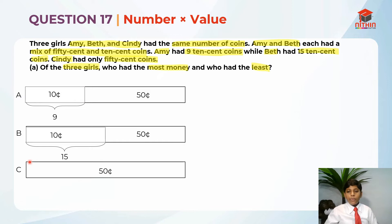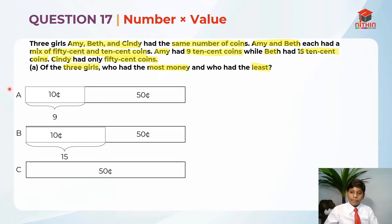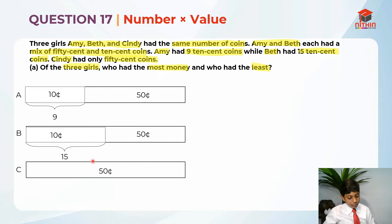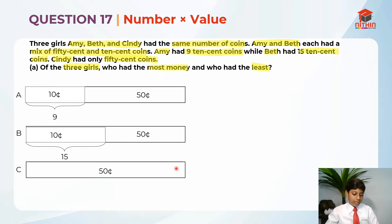So now, who had the most money? We can work out from the most money first. Is it Cindy, Beth, or Amy? We see that Cindy had 50 cent coins for the whole bar, but the rest of them have a mix. Is 50 cent more than 10 cent? 50 cent is definitely more than 10 cent. So that is why Cindy has the most amount of money.